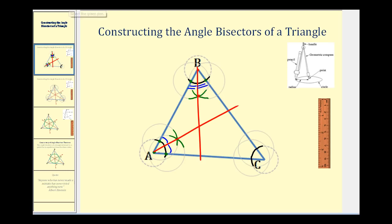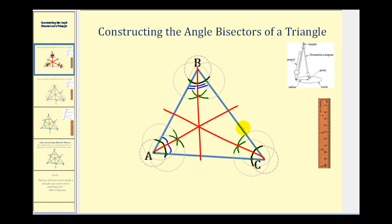We'll do this one more time at vertex C. We'll put the point of the compass here and swing an arc in the interior of the angle, something like this. Then put the point of the compass at this point of intersection and do the same. Our angle bisector will begin at point C and pass through the intersection of these two arcs, giving us two smaller congruent angles.